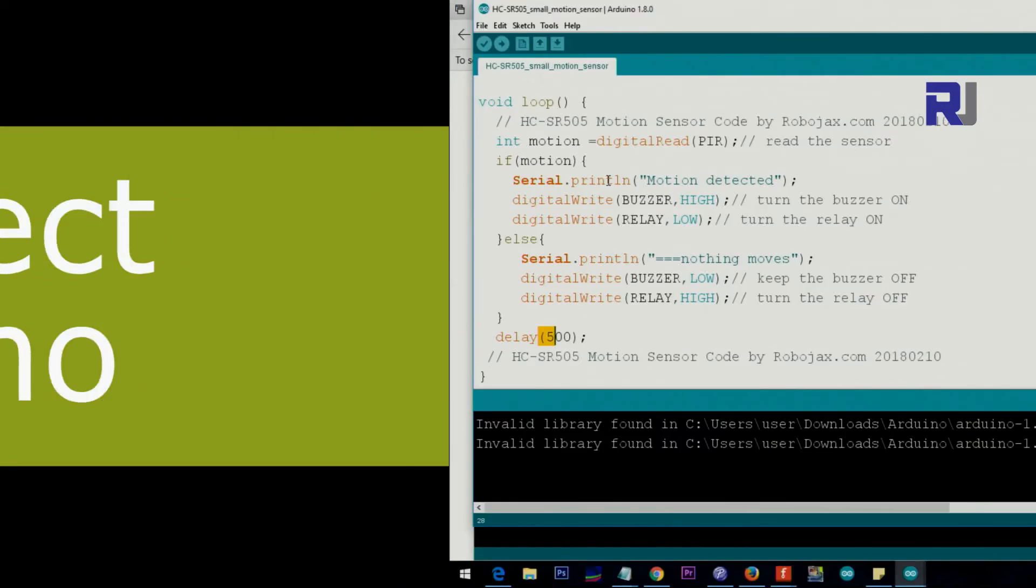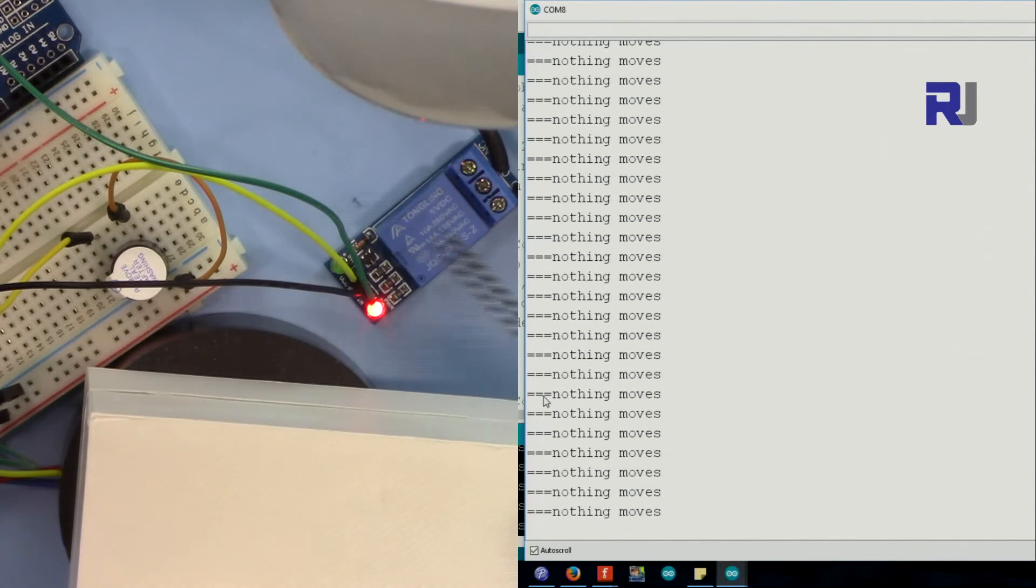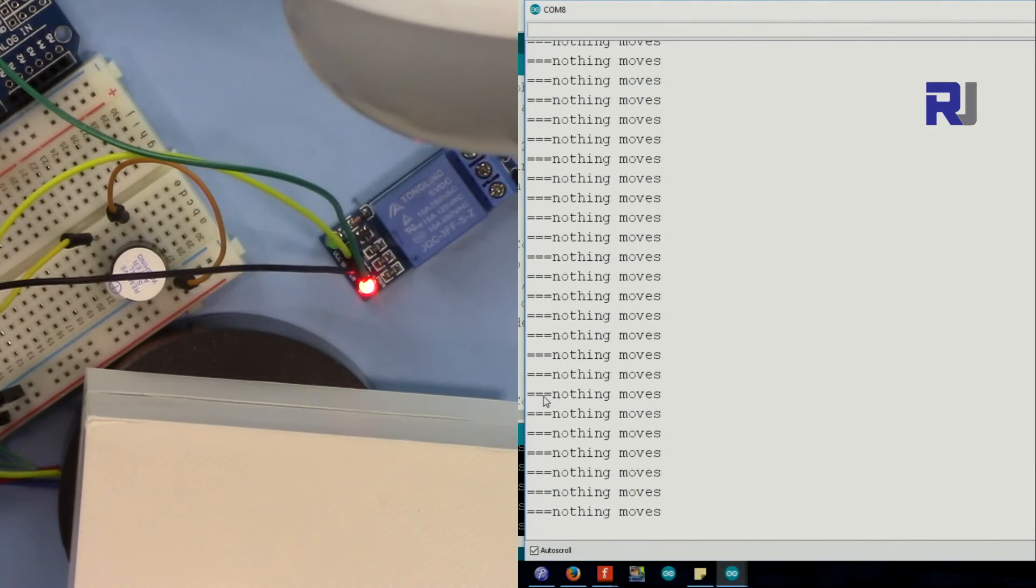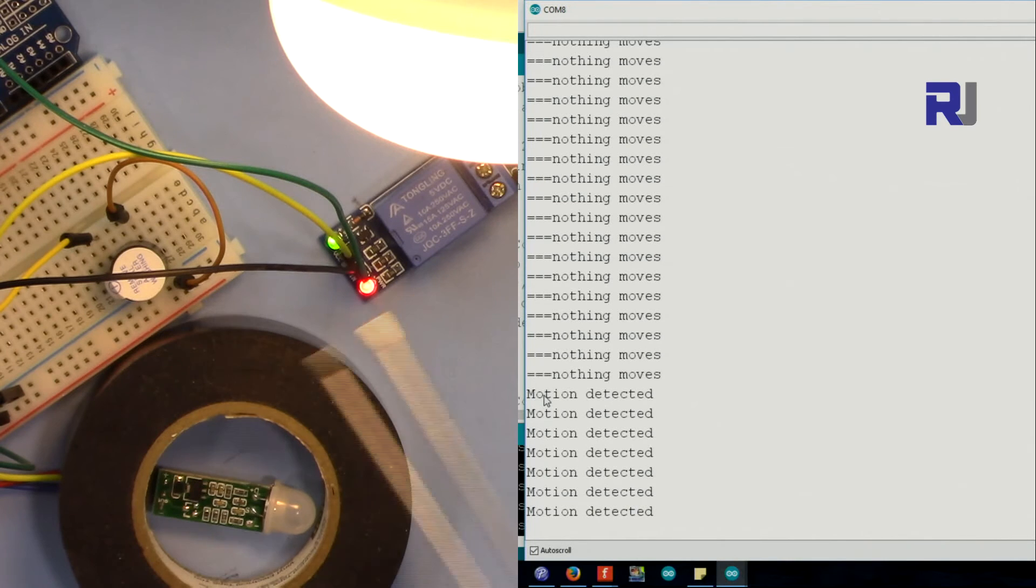As you can see on the screen it says nothing moves. The device is on here and the relay has power, it's just waiting. The light, the AC bulb is also off and the buzzer is off. I have covered the sensor underneath here with this box because as soon as I was moving it was going to be turned on. So now as soon as it detects the motion, the light is on, the buzzer is on.